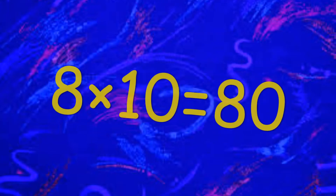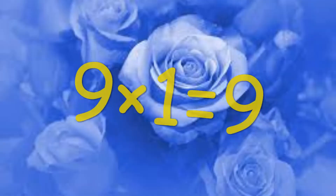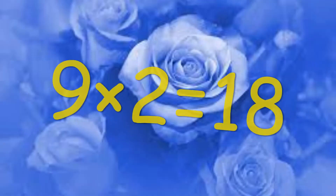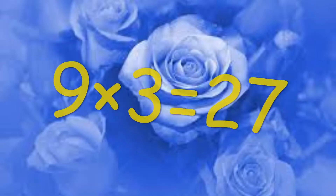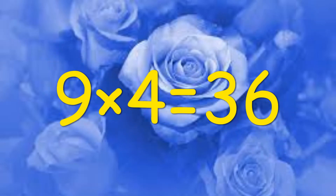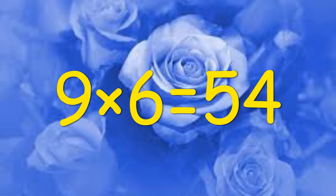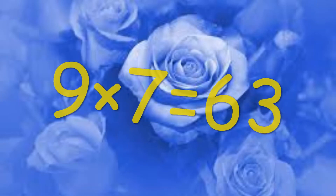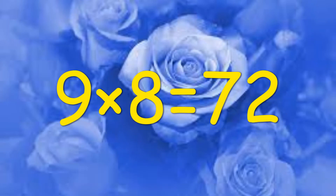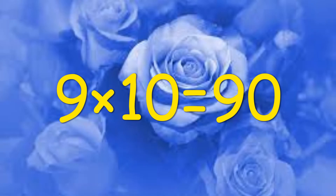Eight ten's a eighty. Table of nine: nine six's a fifty-four, nine seven's a sixty-three, nine eight's a seventy-two, nine nine's a eighty-one, nine ten's a ninety.